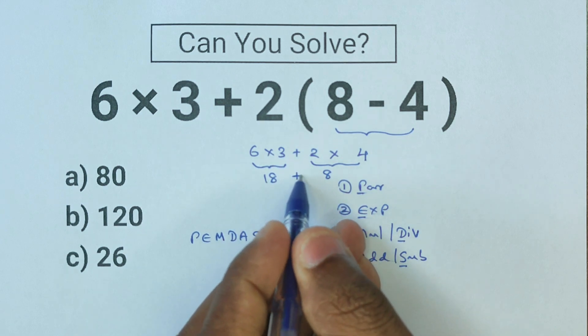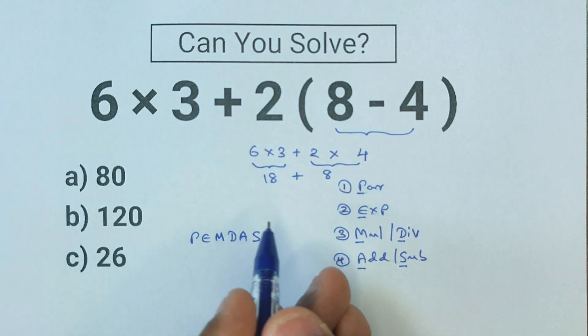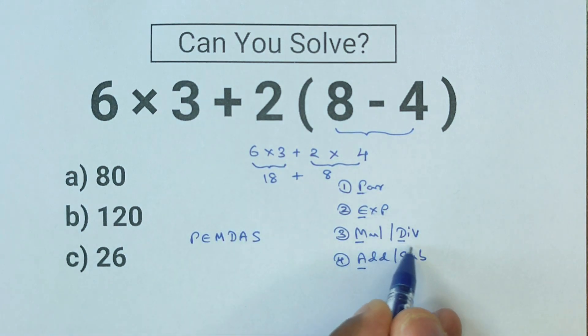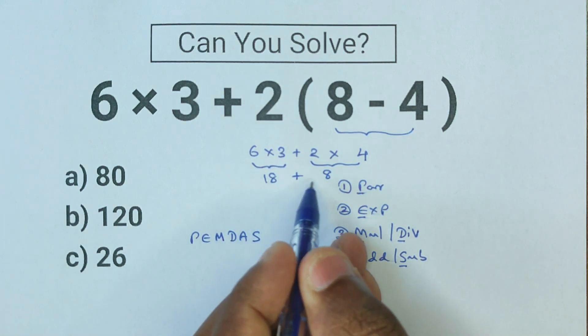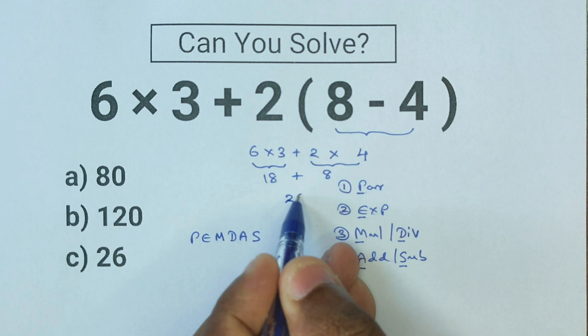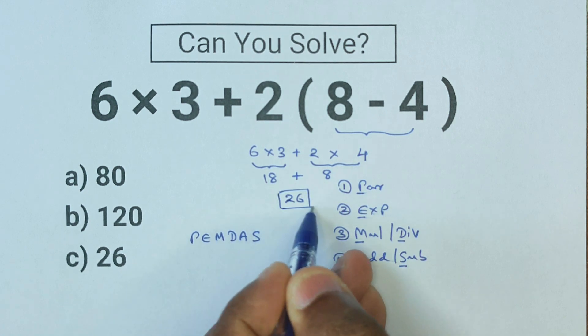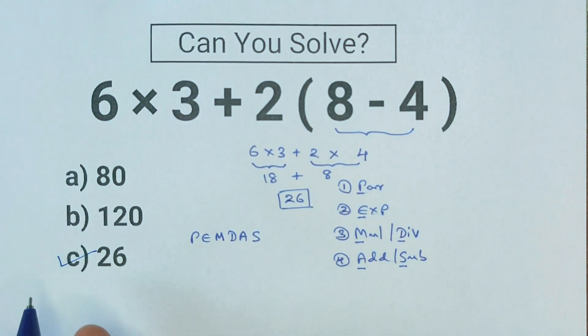Now we can move on to the next order of operation: adding and subtracting. Here we have an addition: 18 + 8 equals 26. This is our answer, so option c is the correct answer.